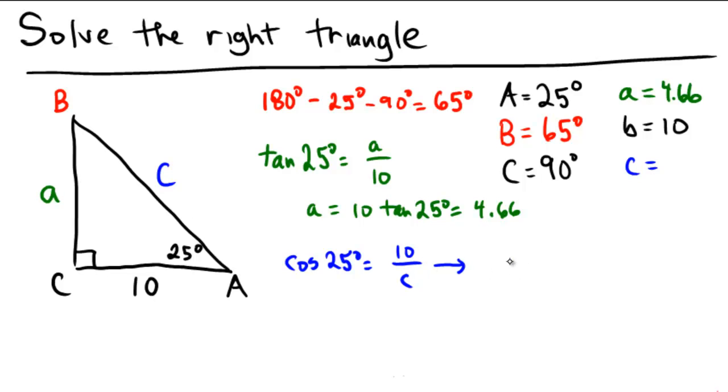So multiplying by C and dividing over by cosine 25 means that C is going to be equal to 10 over cosine of 25 degrees. And breaking out the trusty old calculator, 10 divided by cosine of 25 is 11.03.